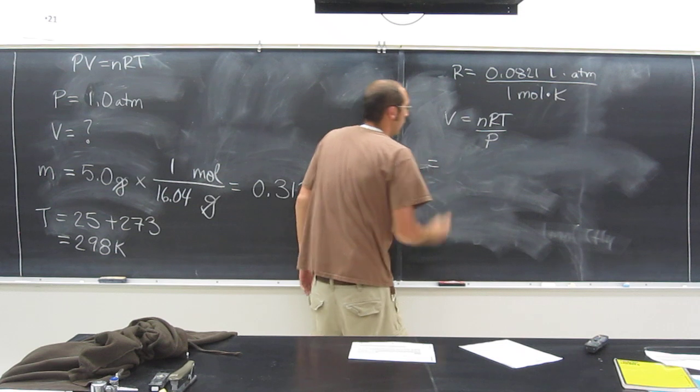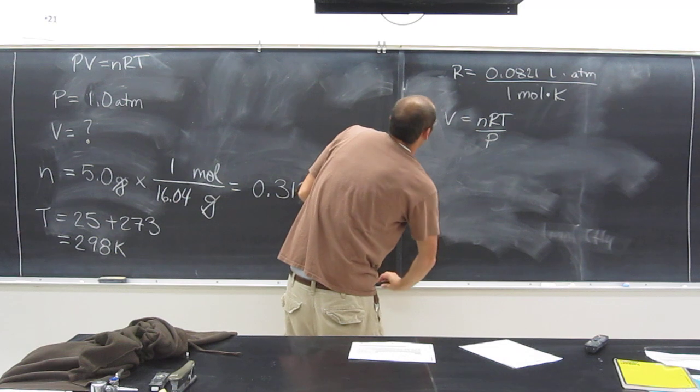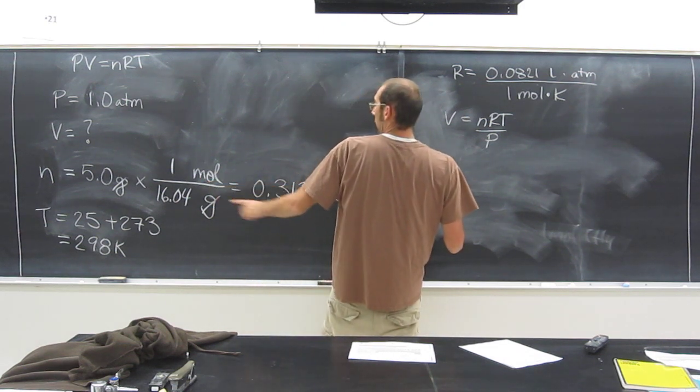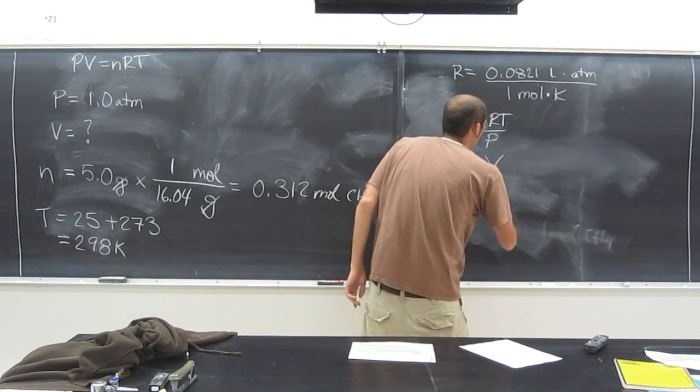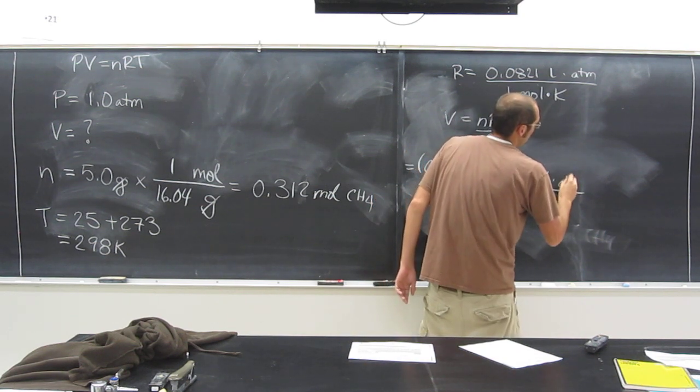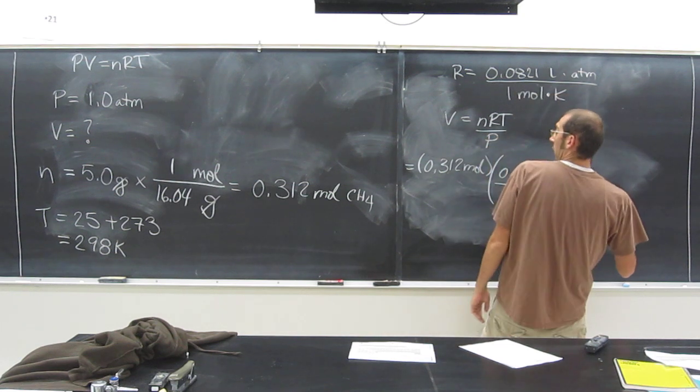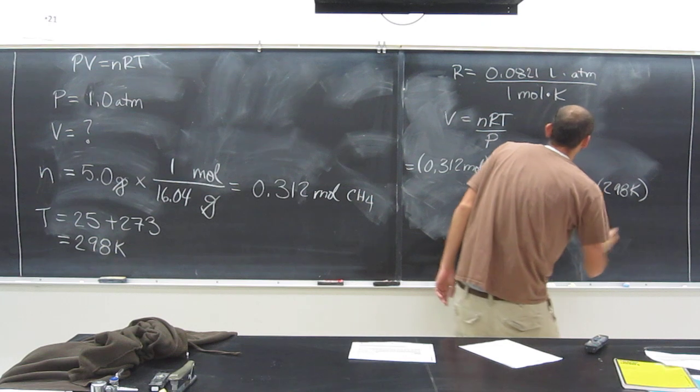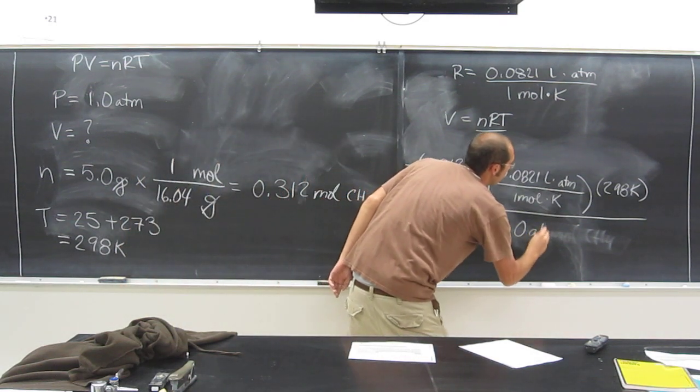So let's just plug in. Do we have all these values? So this is now not M anymore, that's N, right? Do we have N? Yes. Do we have R? Yes. Do we have T? Yes. P? Yes. We're cool. So let's plug everything in. So n is 0.312 moles. R? So this is why I want you to write it like this. I want you to make it big. It helps out the introductory chemistry student, I promise you. T, divided by P, 1.0 atm.